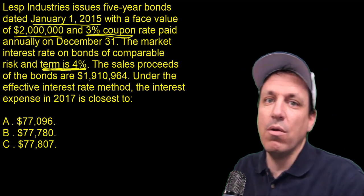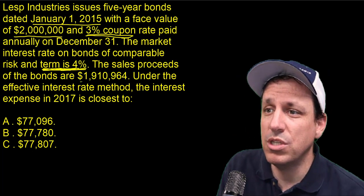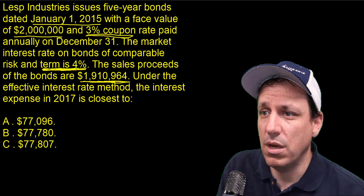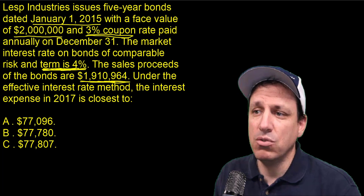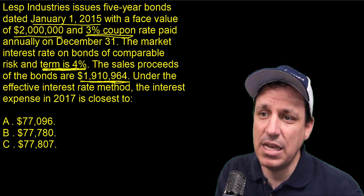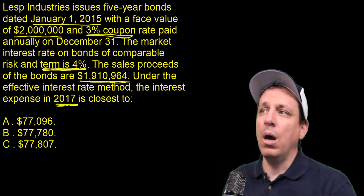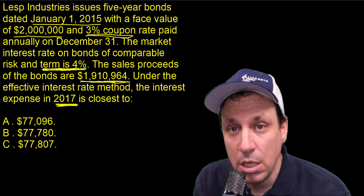The sales proceeds, oh, they already figured out the present value. So the sales proceeds are $1.9 million in total, $1,910,964 under the effective interest rate method, the interest expense in 2017. 2017. Oh, no. Oh, no. No.